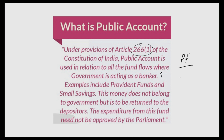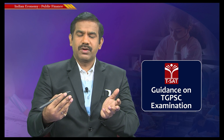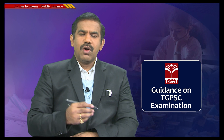A provident fund is a person's income — a proportion of income saved with the government. A tax, on the other hand, is something we are obliged to pay and is revenue to the government. The money in provident funds or post office savings or national small savings certificates is the public's own earnings, and therefore maintained as a separate account — the Public Account.